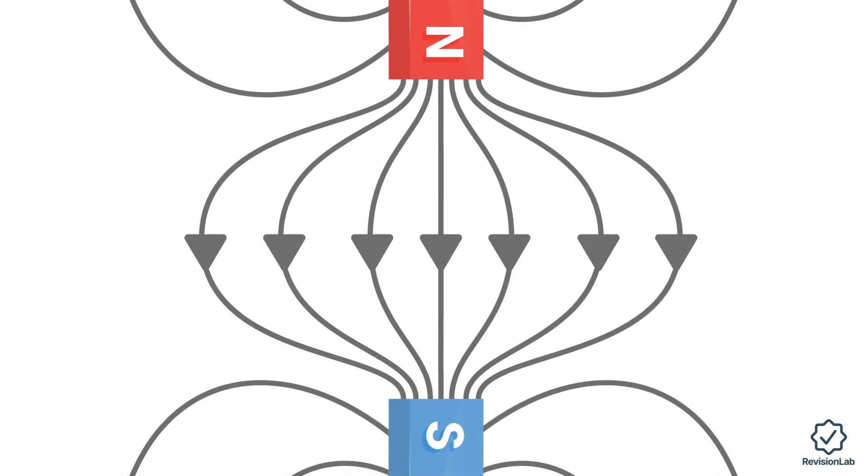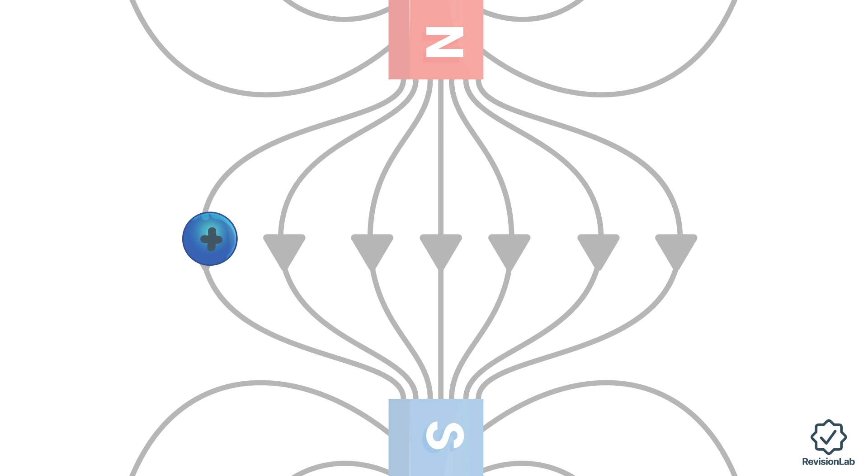The principle is exactly the same in the mass spectrometer, except rather than a hairdryer we use an electromagnet. This is because a charged particle moving through a magnetic field will experience a force.